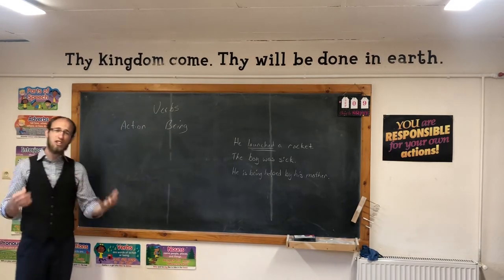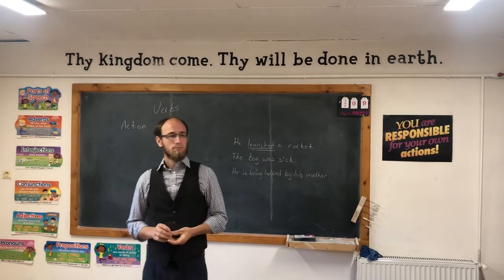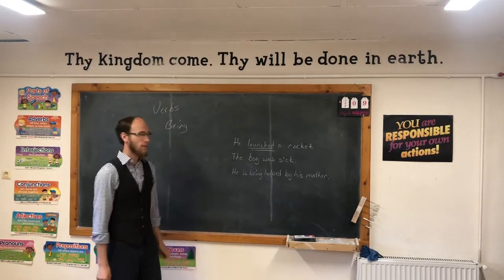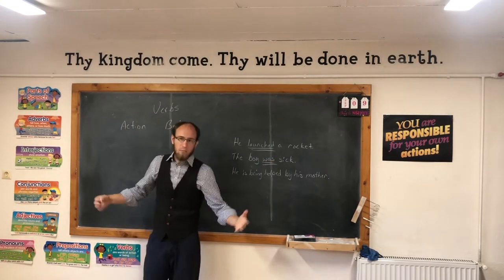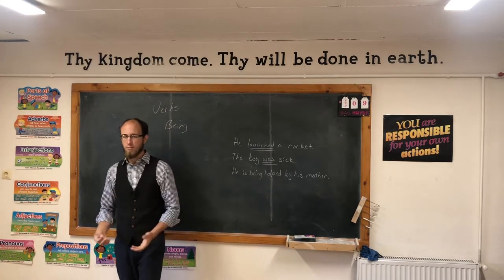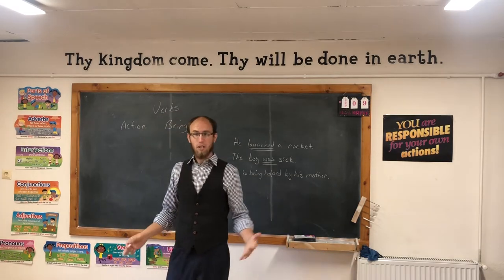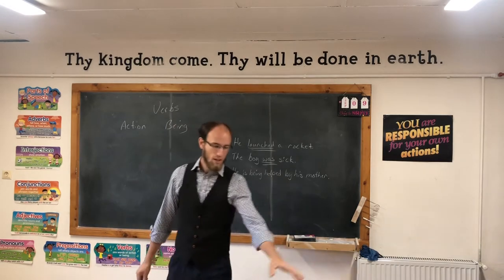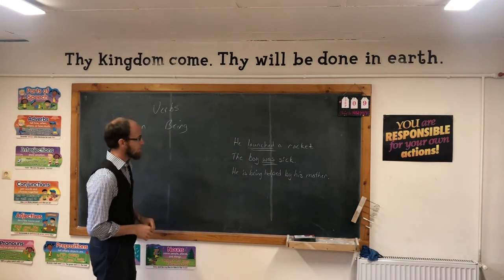Being verbs just state something — they state the existence of something. 'The boy was sick.' What's the verb in there? Was. The boy is just plain laying in bed. The being verbs are: am, is, are, was, were, be, been, being. They just state that something exists. 'The coffee is on the table. The students are at their desks.' That's a being verb.